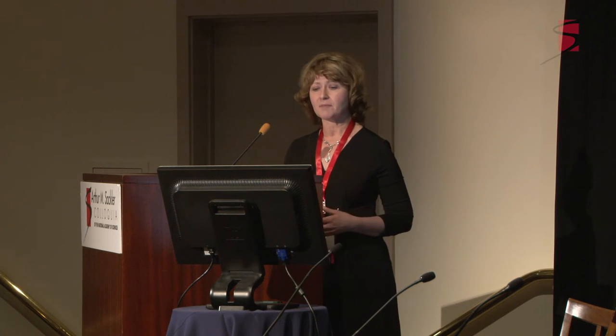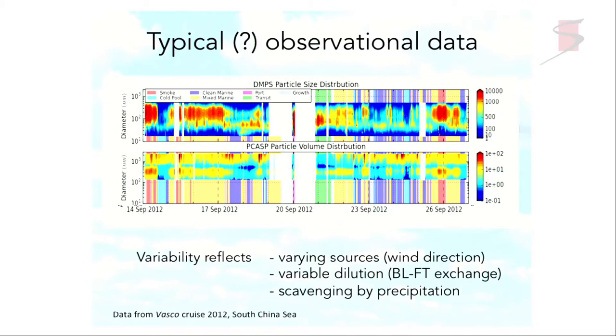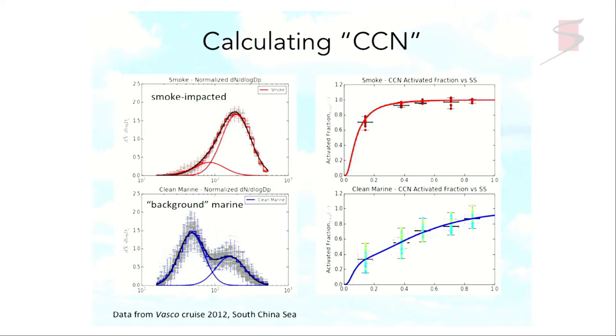So the variability we see there reflects the varying sources of aerosol, something as simple as wind direction. Variable dilution rates — there's a lot of boundary layer/free troposphere exchange happening that we can't see directly at the surface, but we can see the impacts. One example is smoke aloft that is being pulled down into the boundary layer; we see a very large increase in the accumulation-mode particles in both signals. There's also scavenging by precipitation, like that example in the clean marine air mass. The ideal is to take these kinds of data and simplify them to provide representations for modeling based on the physics we think we understand.